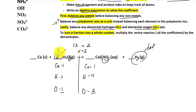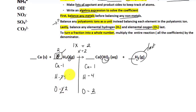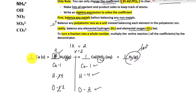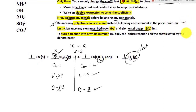Because we put a coefficient there, it affects every single element in that compound. So we have 2 times 2, giving us 4 hydrogen, and 2 times 1 giving us 2 oxygen. All elements are balanced — calcium, hydrogen, and oxygen. Any compound without a listed coefficient has a coefficient of 1. Notice how we ignored those two steps in this case because we didn't need them.